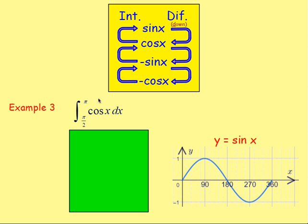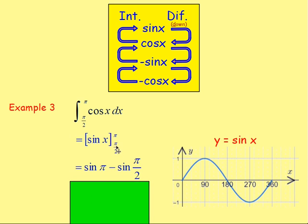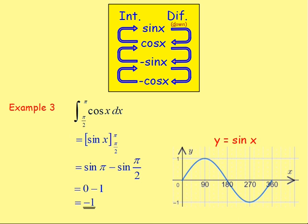Example 3: integrate cos(x) between π and π/2. Integrating cos(x) gives sin(x). With these limits, in big square brackets, we substitute the top value: sin(π). Then take away what we get subbing in the bottom: sin(π/2). π is 180°, π/2 is 90°. Sine of 180° is 0; sine of 90° is 1. So we have 0 − 1 = negative 1. That's our answer.